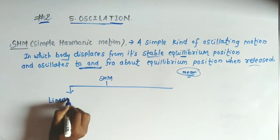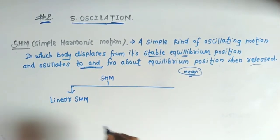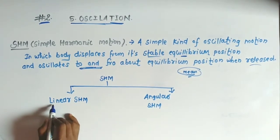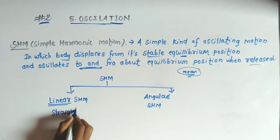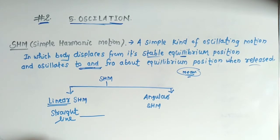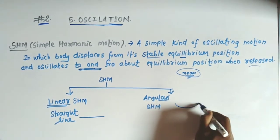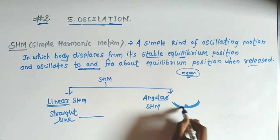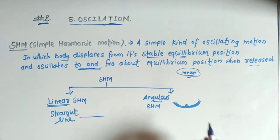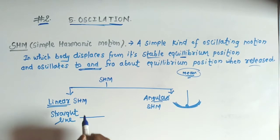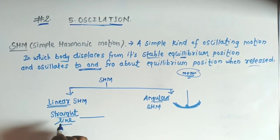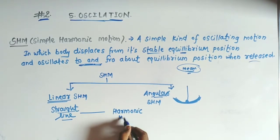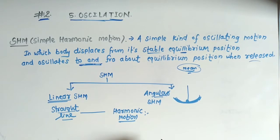Simple harmonic motion is classified into two main parts: first, linear SHM — linear simple harmonic motion; and second, angular SHM — angular simple harmonic motion. In linear SHM, the body moves along a straight line path. Harmonic motion is an oscillatory type of motion.